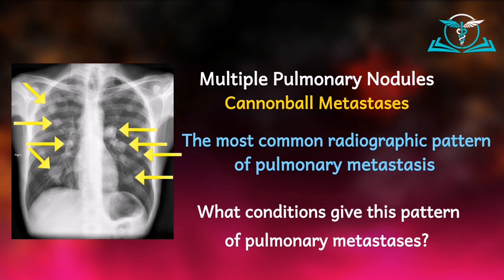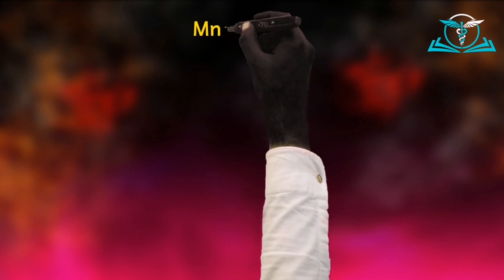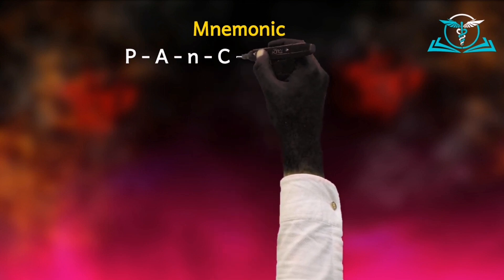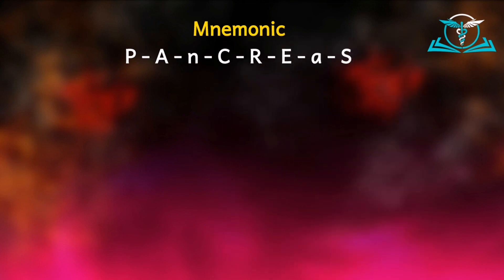We want to see that with a mnemonic to help us remember the conditions which typically give a cannonball appearance on the plain chest radiograph. The mnemonic is PANCREAS — as in the organ that secretes insulin and glucagon. We spell it as capital P, capital A, small n, capital C, capital R, capital E, small a, and capital S — indicating that the letters n and a are not part of the mnemonic.